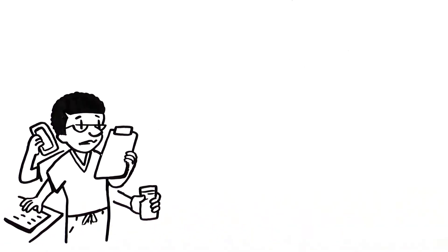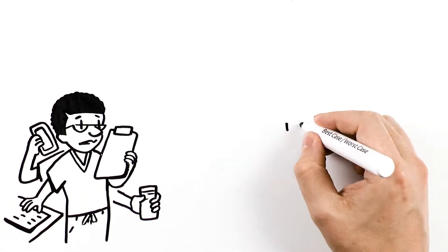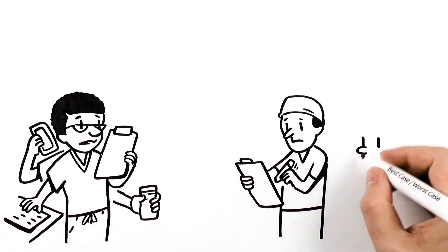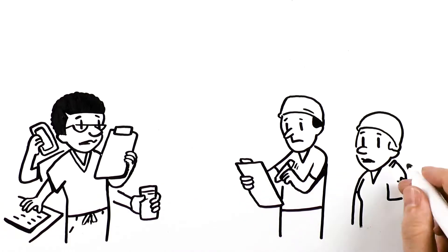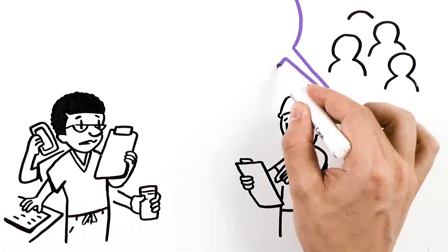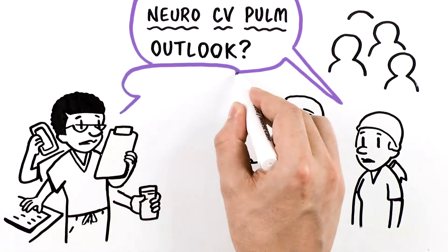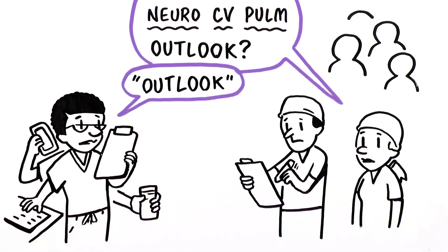During your hectic day, how can you get this done? Use your knowledge and experience to tell the story of what would happen if everything goes as well as you might hope. You do this on rounds by adding Outlook at the end of the systems-based assessment and plan. A member of your team notes what you say on the graphic aid.